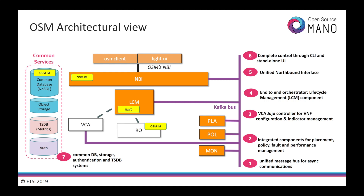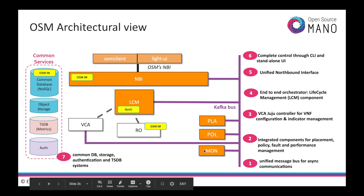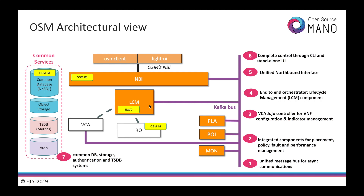This diagram summarizes the modular containerized services that OSM runs. A unified message bus provides asynchronous communications between components such as placement, policy manager, and monitoring services. LCM centralizes the orchestration, taking care of VNF management and indicators through VCA, and virtual resources through the RO. A unified NBI interface makes all services programmatically available directly to external systems, or for operators through the OSM CLI or dashboard. A collection of common services, also containerized, provides databases, storage, and authentication functions for the system.